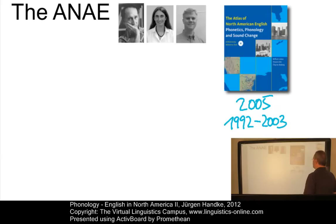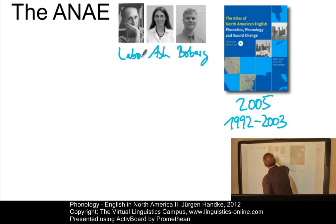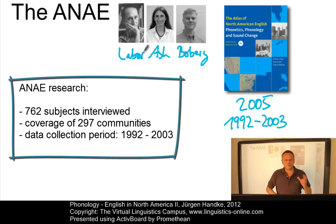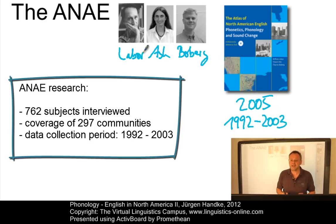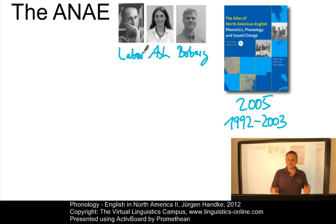Together with his co-workers Sharon Ash and Charles Boberg, Labov interviewed a total of almost 800 subjects from something like 300 communities, including Canada and Alaska. The interviews were based on a variety of interviewing techniques to obtain different types of data — keywords, minimal pairs, and so on. To obtain reliable results, the data was examined acoustically and the resulting maps with their isoglosses were based on features such as formant analysis and other types of acoustic measurements.